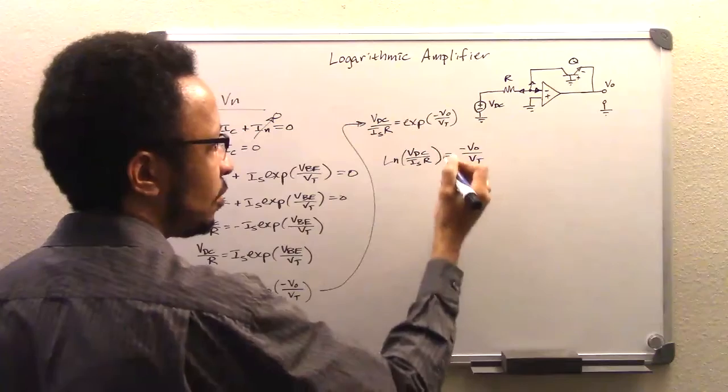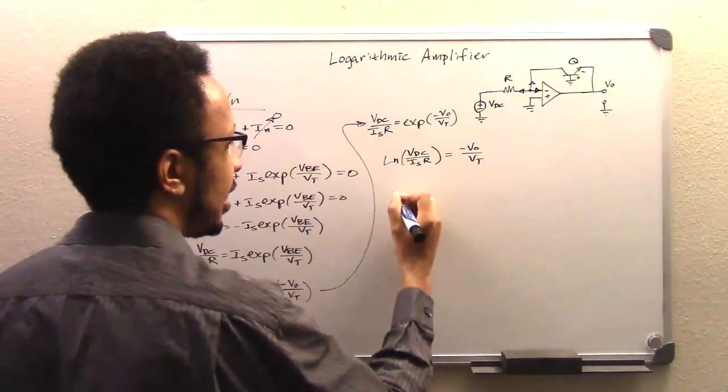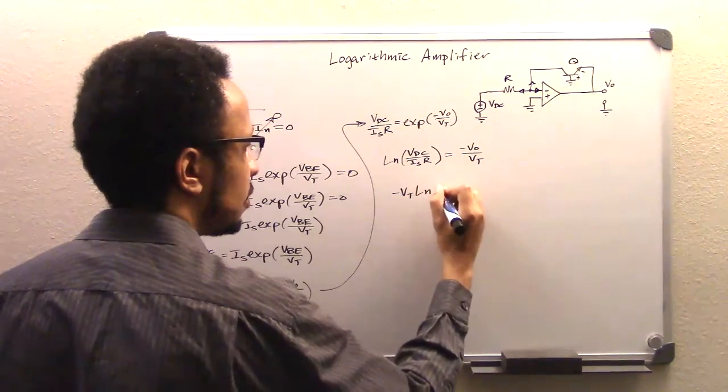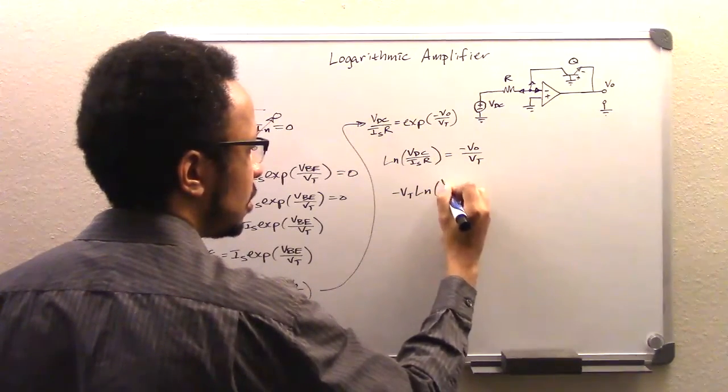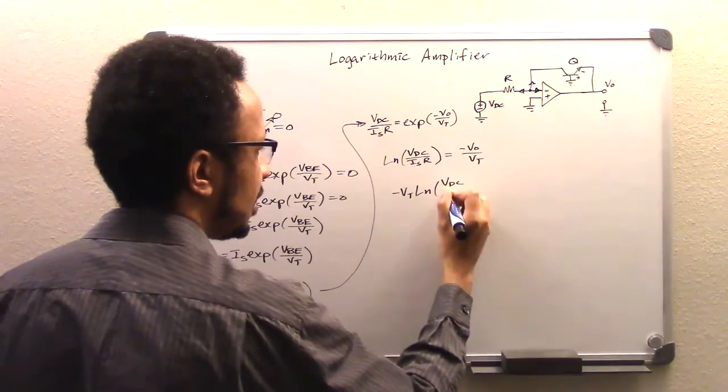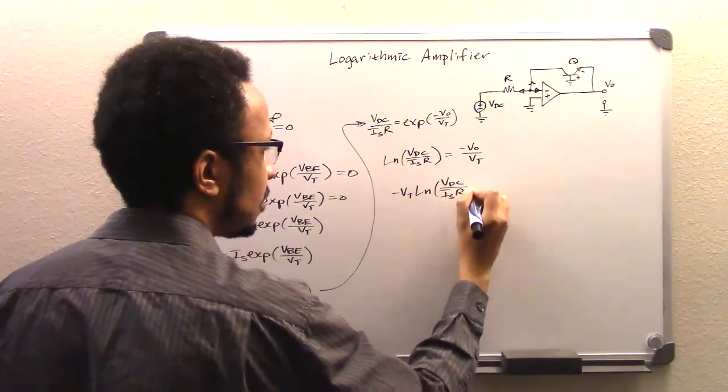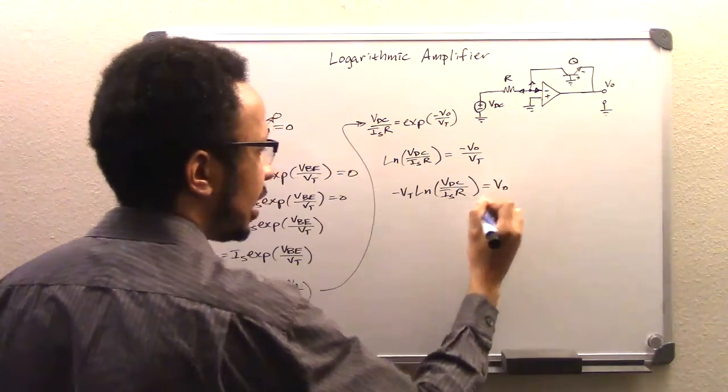Then finally, we're going to bring the rest over to the other side and have negative VT times the natural logarithm VDC over IS times R is going to equal Vout.